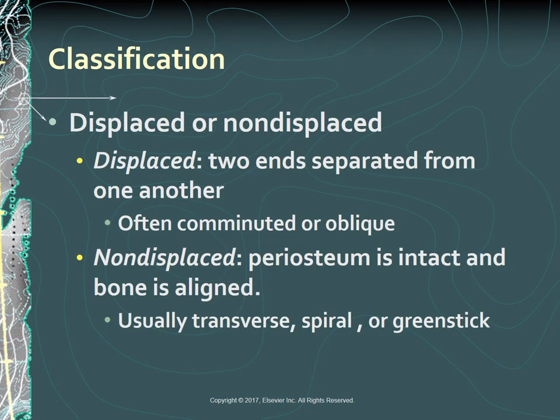Fractures can also be classified as displaced or non-displaced. In a displaced fracture, the two ends of the broken bone are separated from one another and out of their normal positions. Displaced fractures are often comminuted or oblique. In a non-displaced fracture, the periosteum is intact across the fracture and the bone fragments are still in alignment. Non-displaced fractures are usually transverse, spiral, or greenstick.